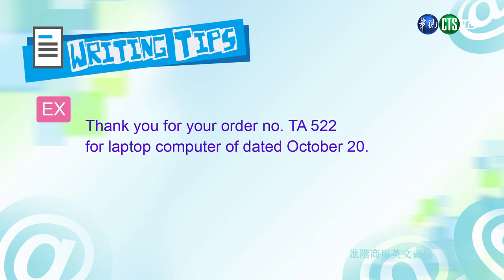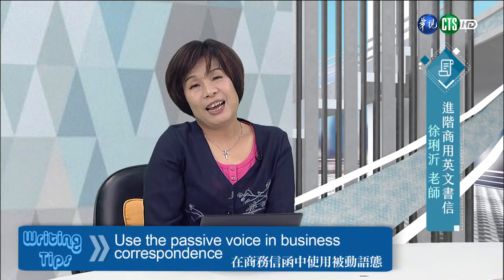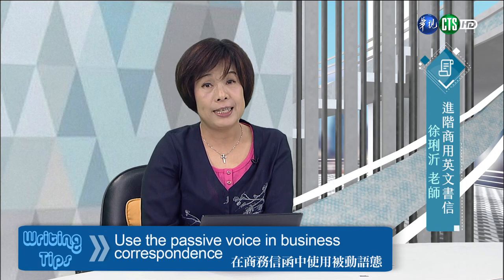我们来看第一个例句, 你怎么告诉对方确认订单呢? 首先你可以说, Thank you for your order number TA-522 for laptop computer dated October 20th. 谢谢你的订单对我们这个TA-522的这个computer, laptop就是notebook computer. 还有一个你可以说, This is to inform you that we have received your order number [number]. 同学, 你看, 这么简单就这样子, 你就会展现你的专业度. 你不用写很长的信, 只要几句话就可以了.